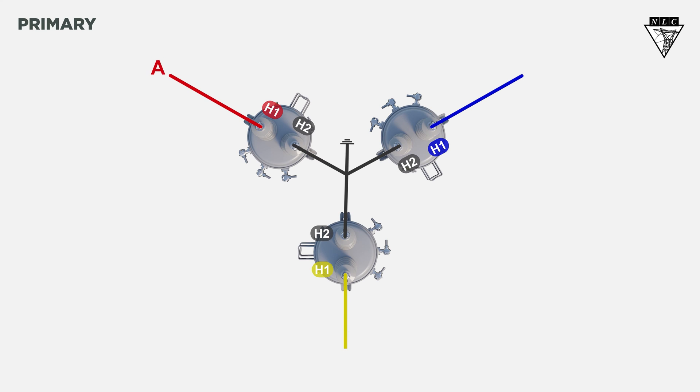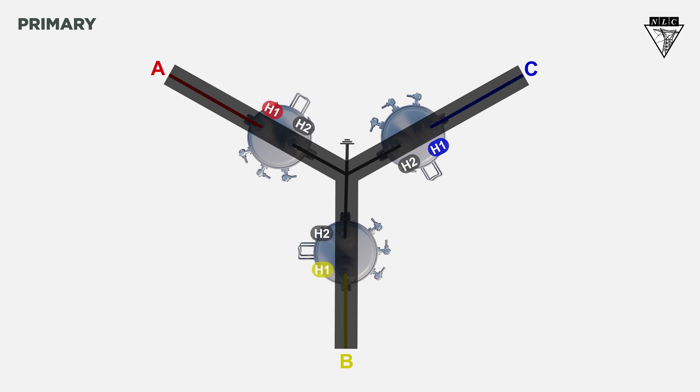We'll label them A phase, B phase, then C phase. This configuration forms the signature Y shape. It's also referred to as a star connection.